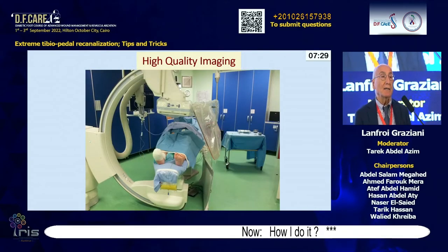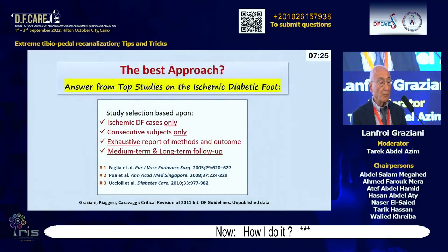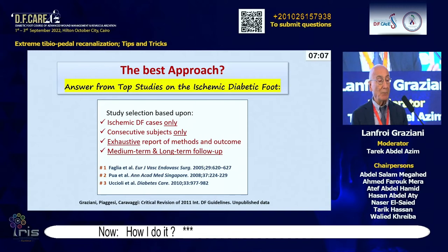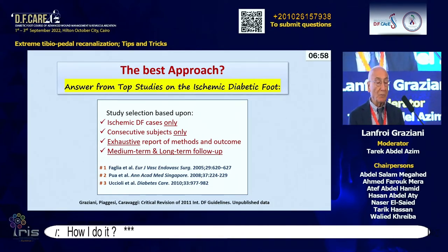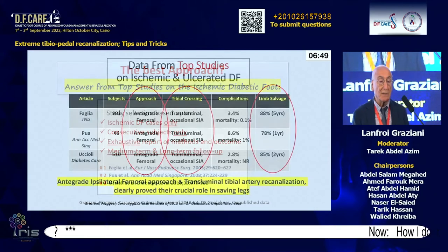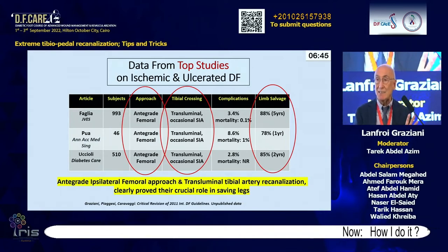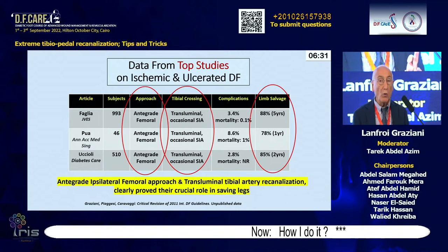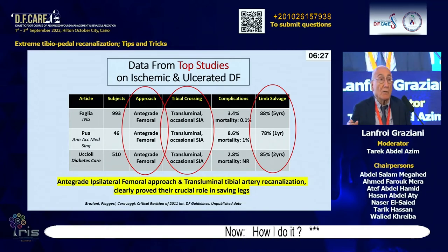This is how to position the patient for a below-the-groin procedure. We base our approach on the available literature regarding limb salvage in the ischemic diabetic foot. We select cases like published papers reporting ischemic diabetic foot cases with conservative subjects, exhaustive reports, and medium-to-long-term follow-up. Three published experiences all use the antegrade ipsilateral femoral approach and transluminal tibial artery recanalization, which has clearly been proven crucial for limb salvage.